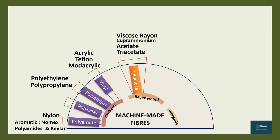The protein-based regenerated fibers are made by dissolving proteins like casein from milk and soya bean protein in chemicals to form a spinning solution, from which the fibers are then extracted.